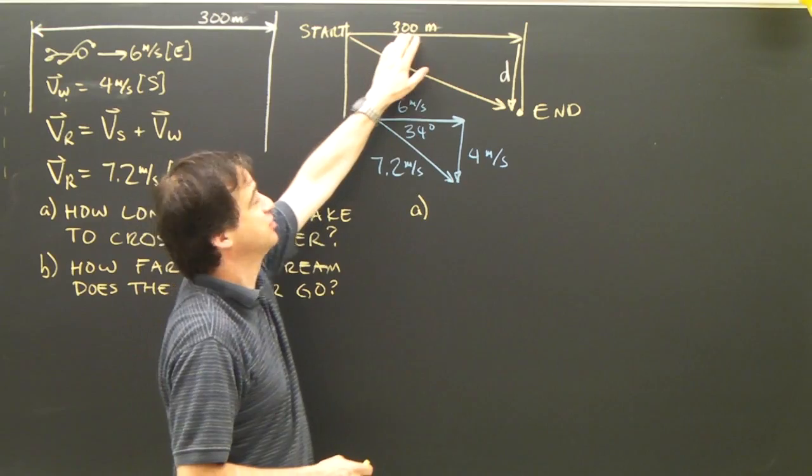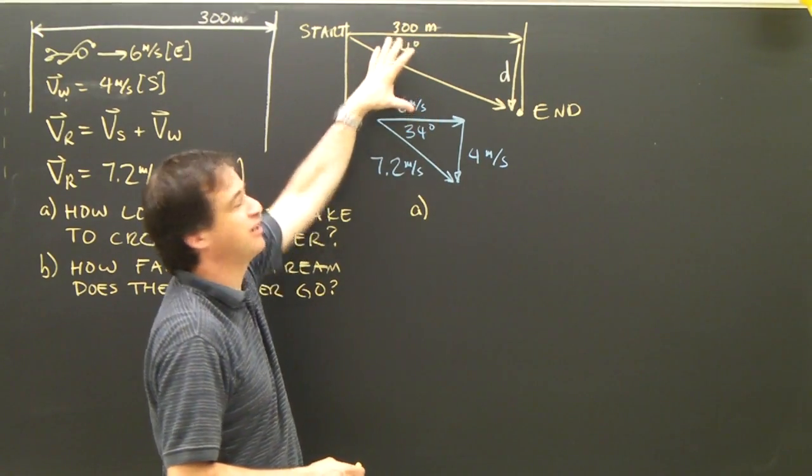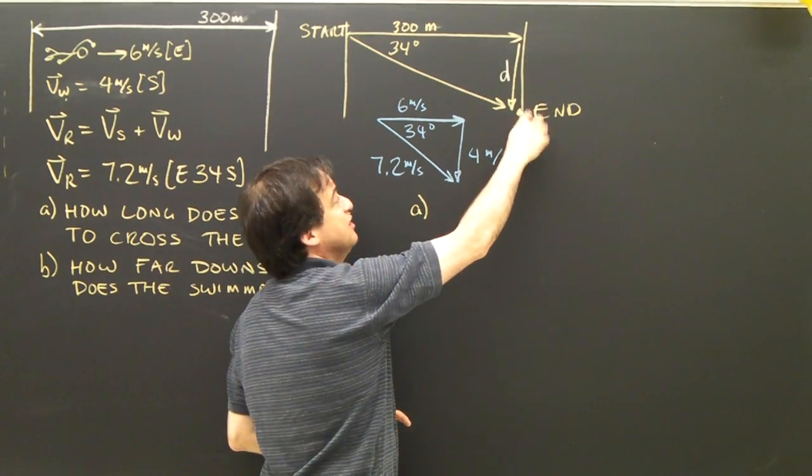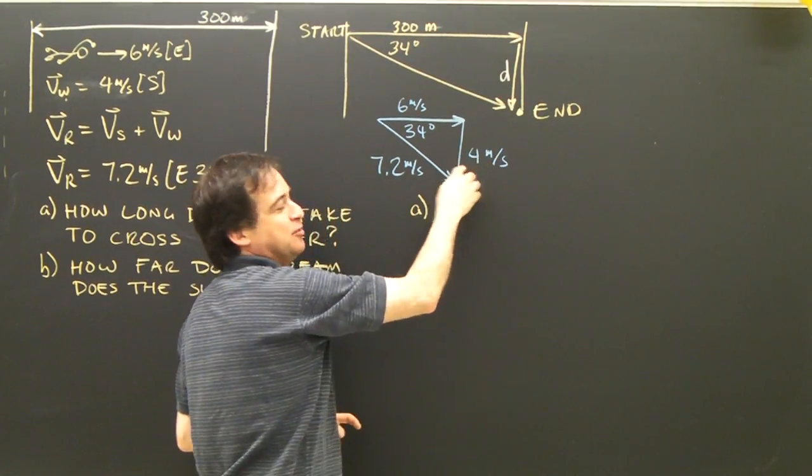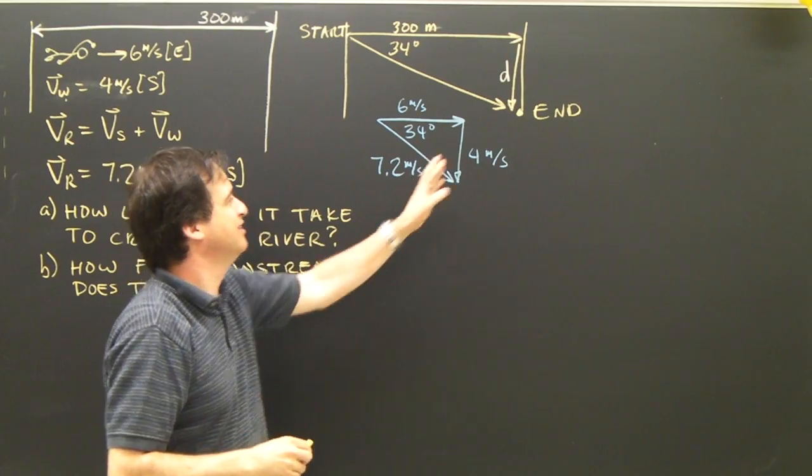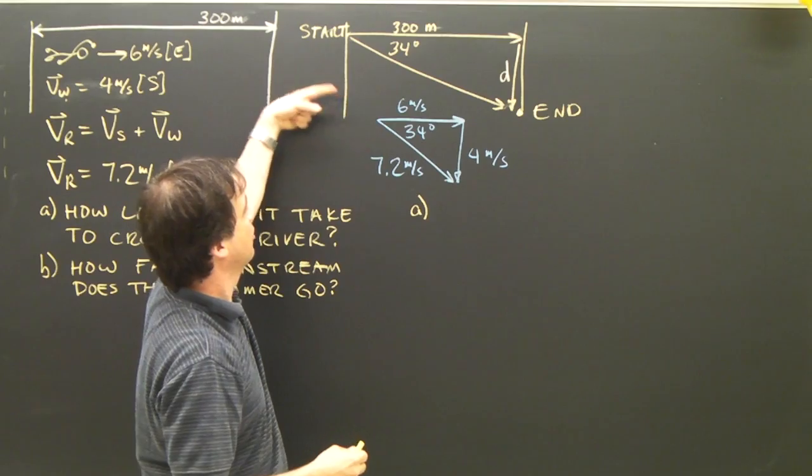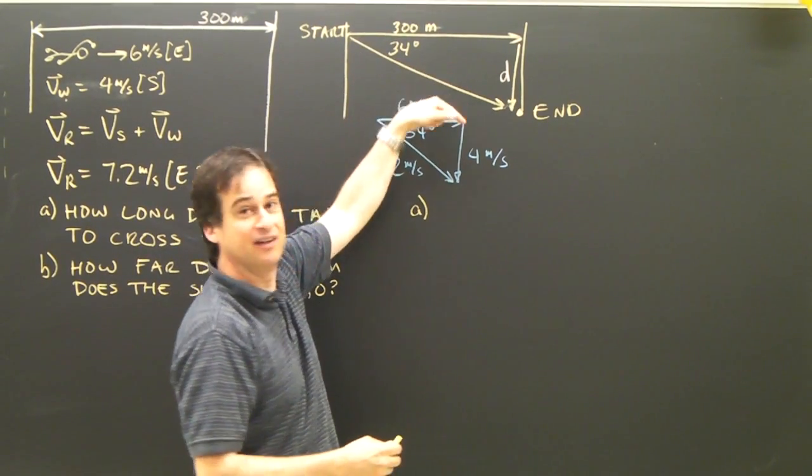This velocity matches up with this displacement. So I consider those two a pair. This is how far downstream the swimmer ends up. This displacement is in line with this velocity. So I consider them a pair and I'm going to use them to calculate. Now it's true, the swimmer isn't going this way and then down, this way and then down.